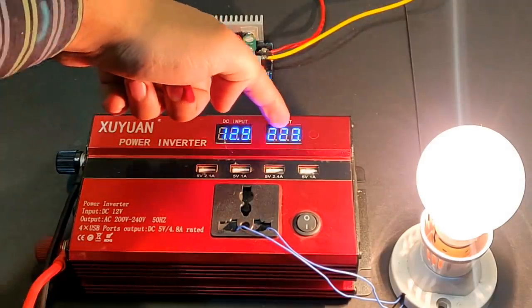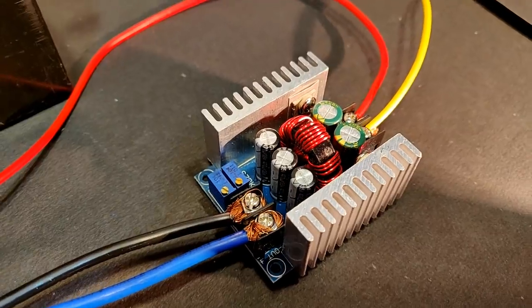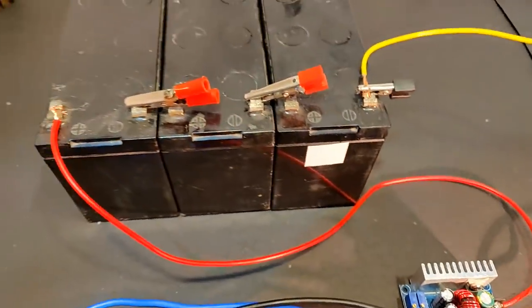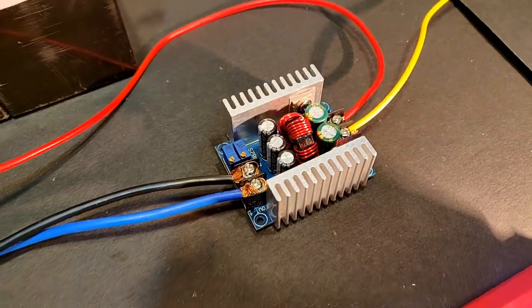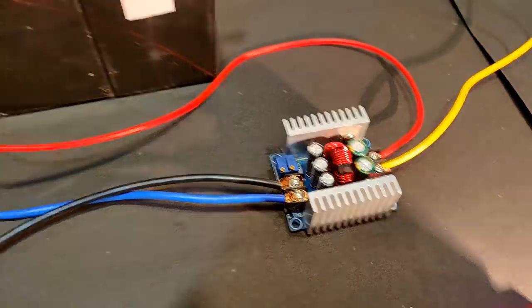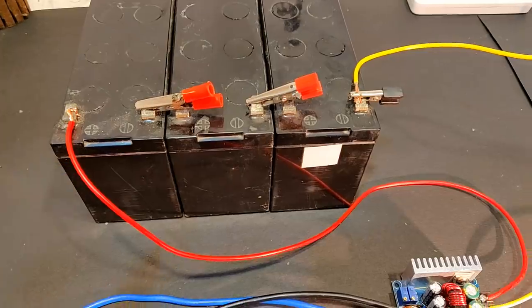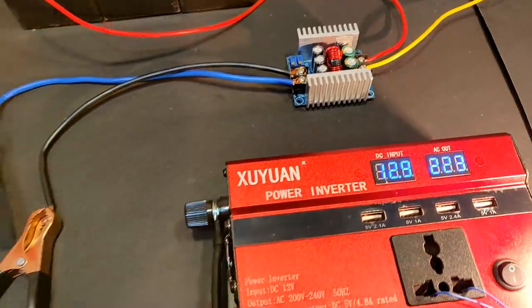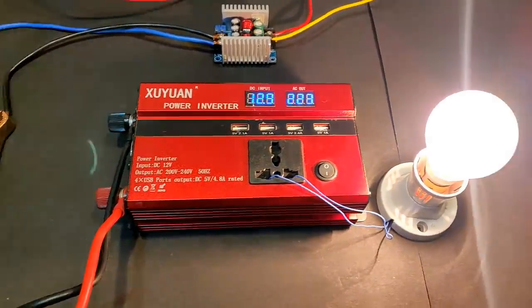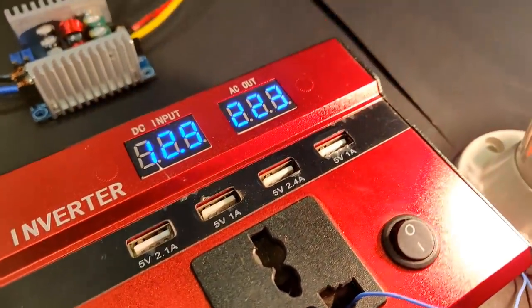So the point of this buck converter, sorry it's a buck converter, point of this buck converter is to reduce the voltage of this series connected 36 volts battery set to just 12 volts which is needed to run an inverter. You can see 12.9 volts and 223. Let's turn it off.